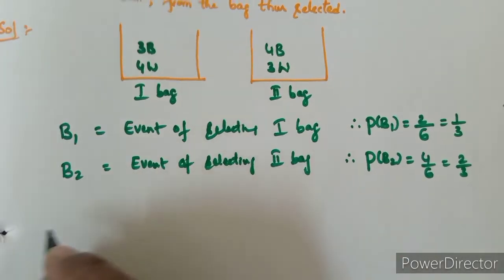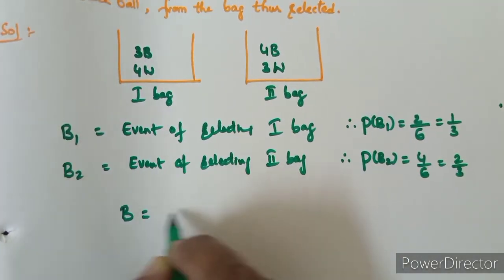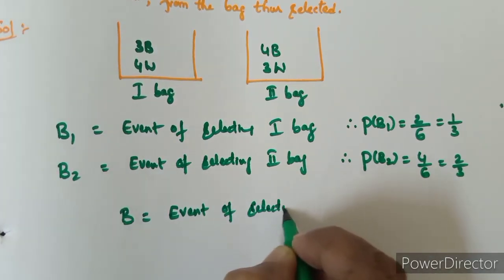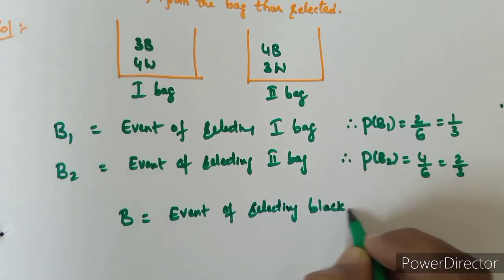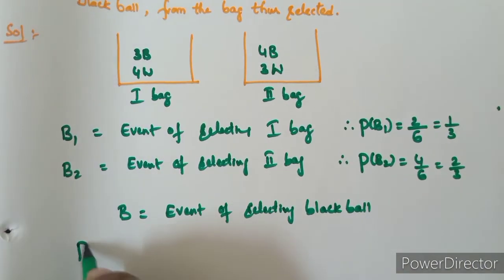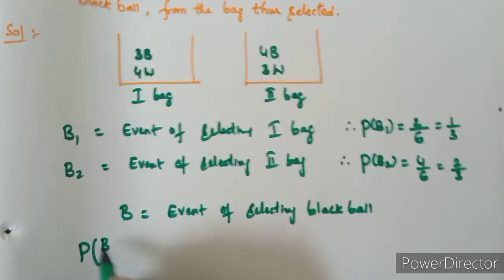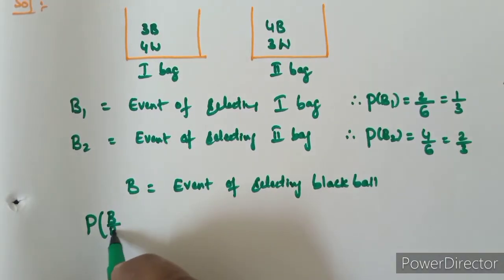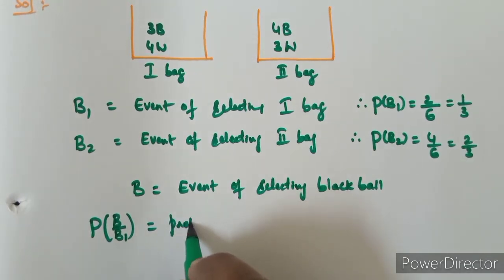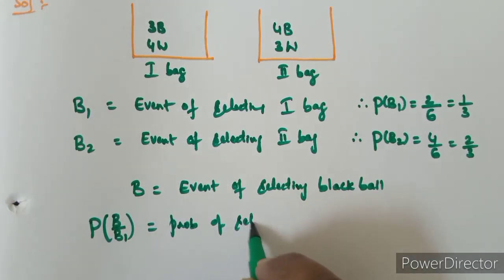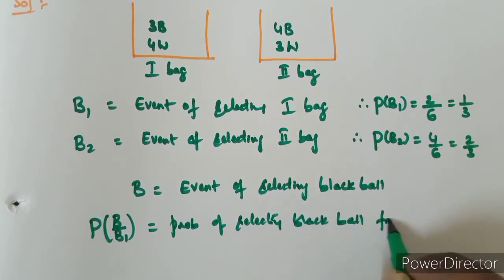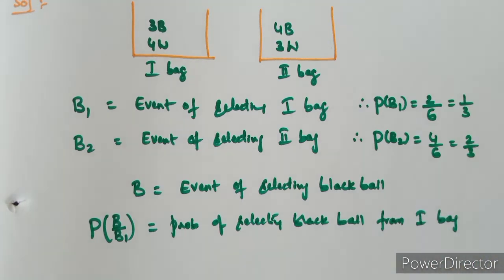B is the event of selecting a black ball. Probability of selecting a black ball from the first bag: in the first bag, there are 7 balls total, and we need to find the probability of selecting a black ball from the first bag.